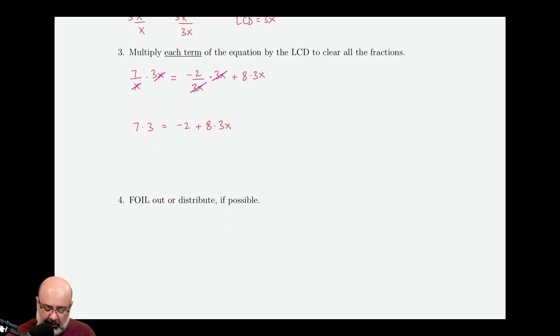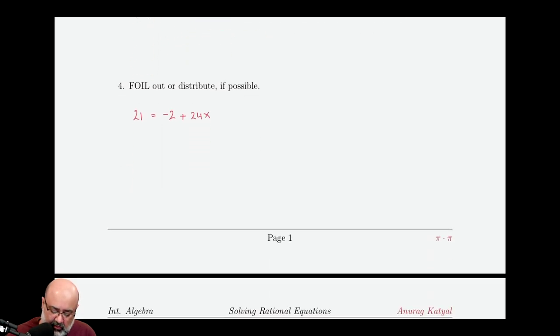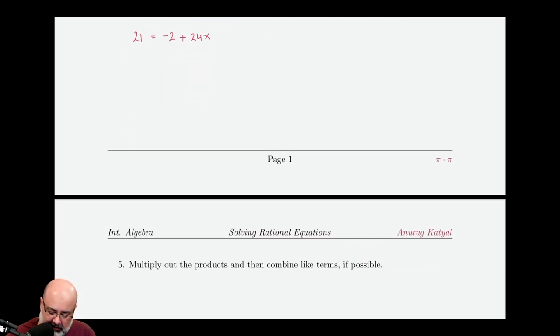Next, we have to FOIL out or distribute if possible. So if there's anything to multiply, we multiply. If there's anything to distribute, we distribute. So 7 times 3 will be 21 equals negative 2 plus 8 times 3x is 24x. We've done that. And now the next thing is multiply out the products and then combine like terms. Well, there are no products and there are no like terms on either side.